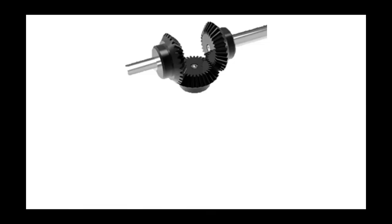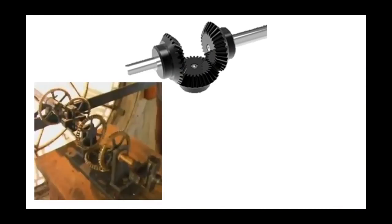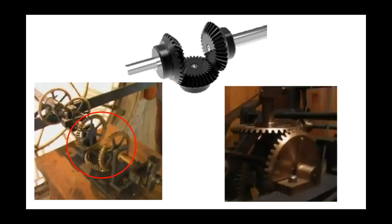Bevel gears can be in combinations like this. This combination was present in a previous video showing the gear train that controlled the hands of a clock in a clock tower. Here it is again inside a grandfather clock.